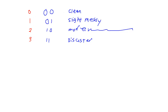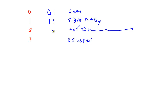We could do that, but there's nothing forcing us to. We could say 0, 1 is clean, and 1, 1 is slightly messy, and 0, 0 is more messy, and 1, 0 is a disaster. It doesn't matter to the computer what values we use to represent what states — that's arbitrary. The computer just deals with the 1s and 0s. It just so happens that generally we do map them sequentially.